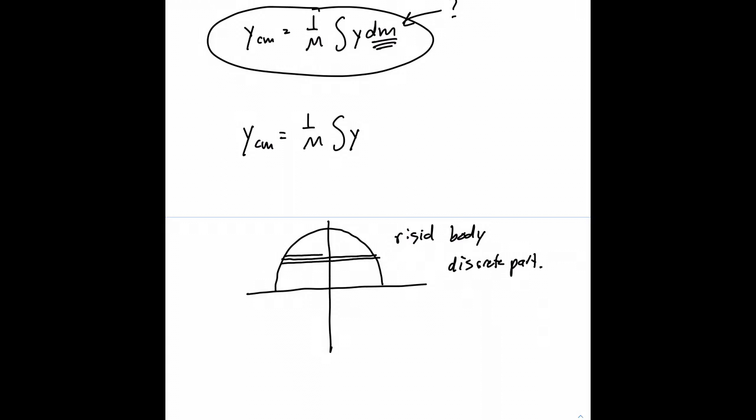Each one of those slices has a thickness to it that we would label as dy, and the mass of any one of those slices has a mass of dm.